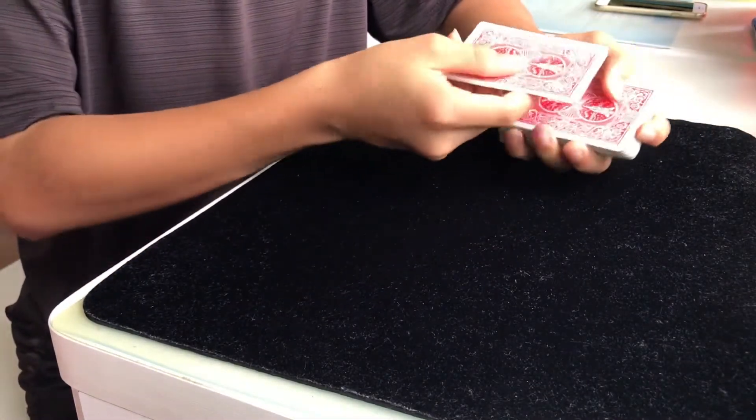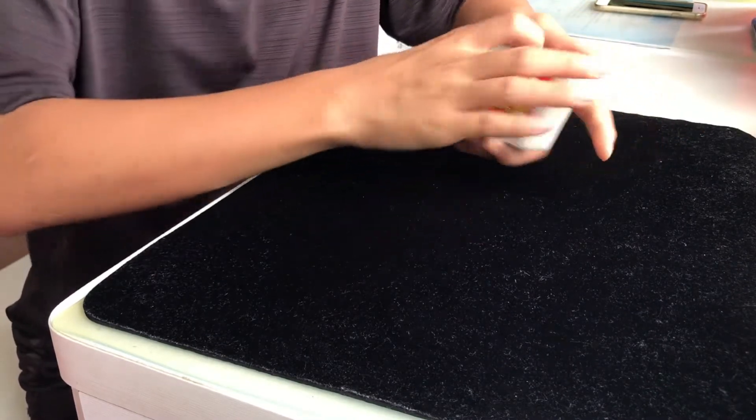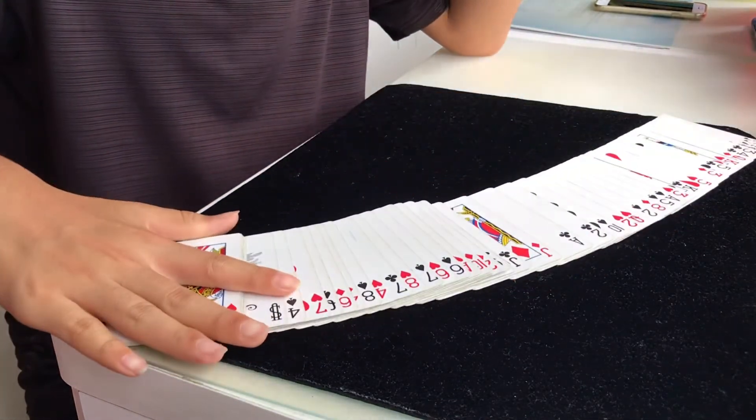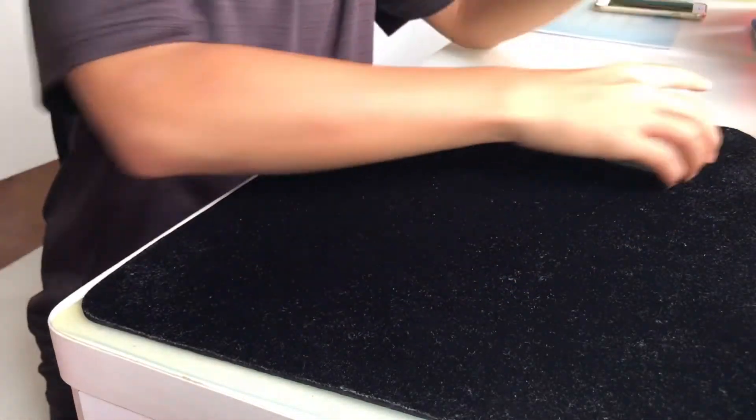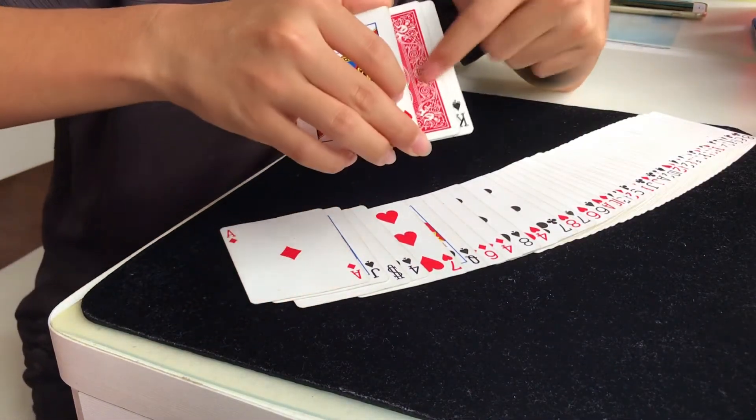And then now we turn this - make sure not to flash this - turn the top one over and you say it's not that card. If you have a table, you want to spread until you see that face-up card, then you stop spreading because you don't want to flash this face-down card at the end.